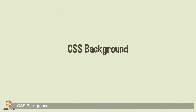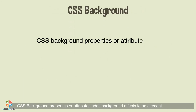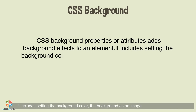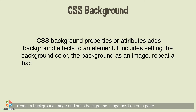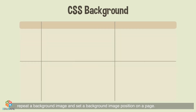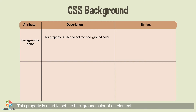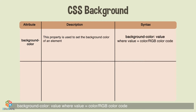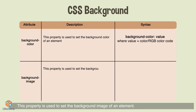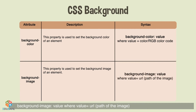CSS Background: CSS background properties add background effects to an element. This includes setting the background color, the background as an image, repeating a background image, and setting a background image position on a page. The background-color property is used to set the background color of an element; its value can be a color name or an RGB color code. The background-image property is used to set the background image of an element; its value is the URL or path of the image.